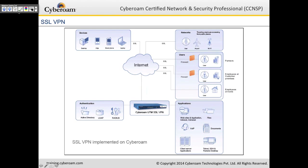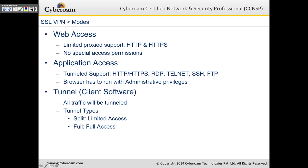Users can access SSL VPN from PDA, mobile phone, laptop, or as a roaming employee from a public Wi-Fi hotspot. CyberROM SSL VPN can be integrated with Active Directory, LDAP, or RADIUS. You can then access office resources like different applications, VoIP documents, or provide access to partners and employees at customer premises. The majority of this can be accessed from the browser itself.